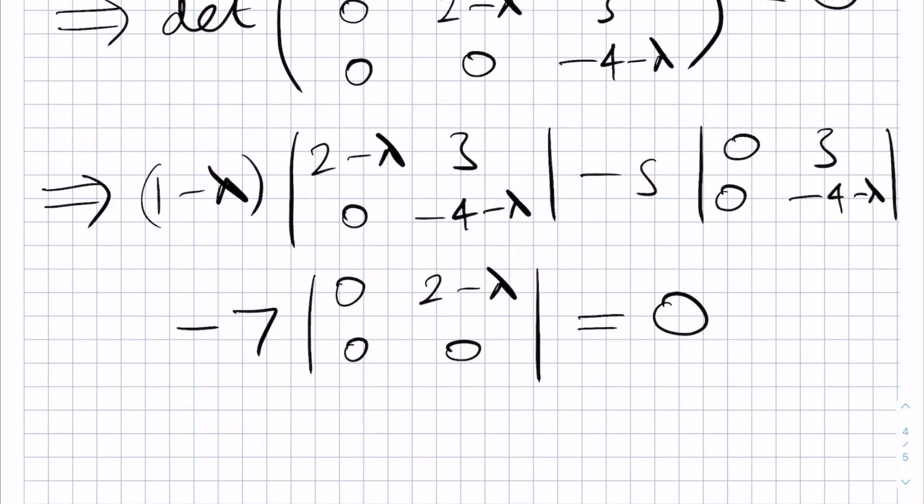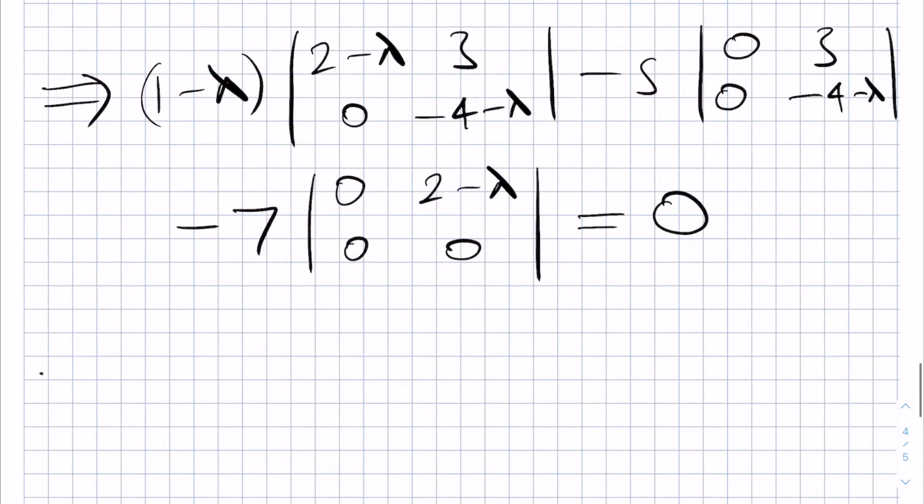Now we notice that these two determinants here and here will be 0 because we have too many zeros in them to begin with. We have a 0 from here and a 0 from here as well as from here and here. Similarly in this one here we also have a 0 from here. This leaves us with only one single term.